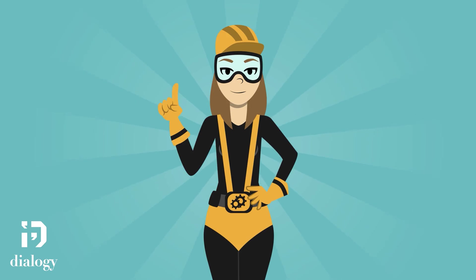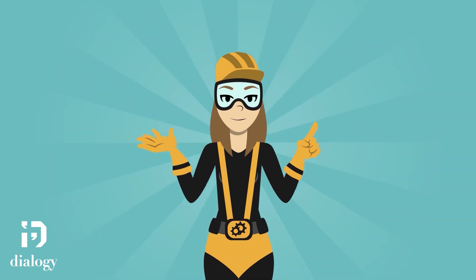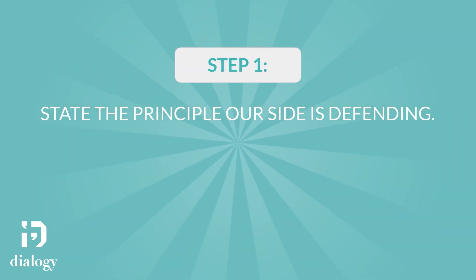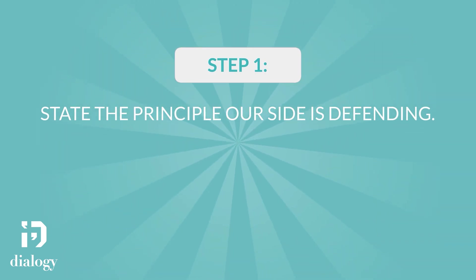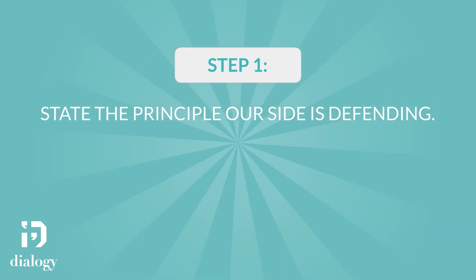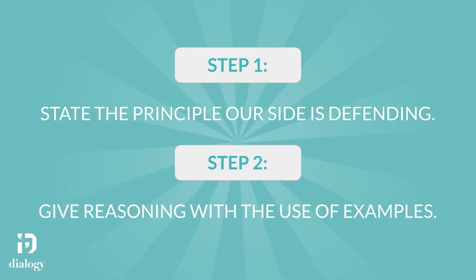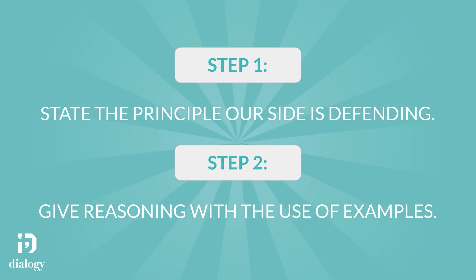Now that we know why principled arguments are important, we can begin to give the necessary steps to making a principled argument. Step one is to state the principle our side is defending. Make it clear to the judge what our side's value or belief stands for, which also serves as the argument's title. Step two is to give reasoning with the use of examples. In running principled arguments, we make use of examples because it shows us other situations where the principle also applies.